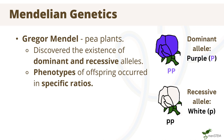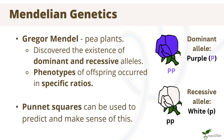But what was the reason for this? We can now use a tool known as Punnett Squares to predict and make sense of his experiment. Let's take a closer look at his experiment using this tool.